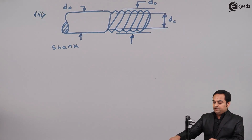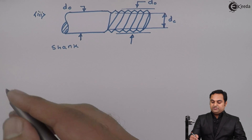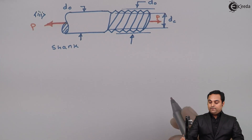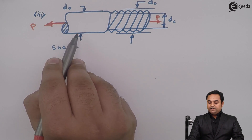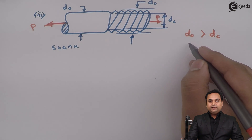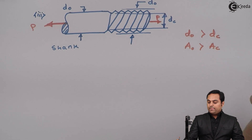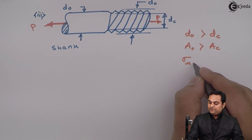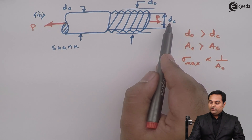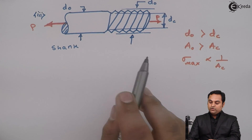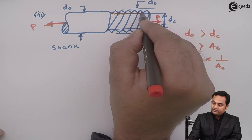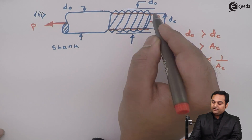When this threaded member is subjected to a tensile load, since the nominal diameter D0 is greater than the core diameter DC, the nominal area is greater than the core area. The core area is minimum, so stress will be maximum at the core area — this is the minimum diameter region. When load is applied, the object will not fail at the shank but at the threaded portion; these threads will break.